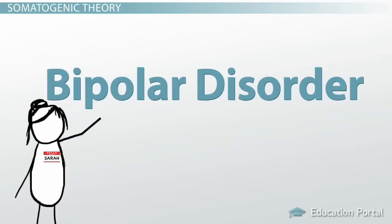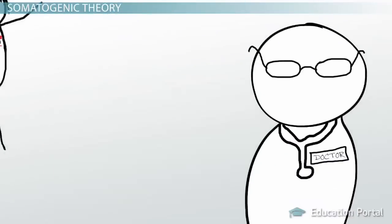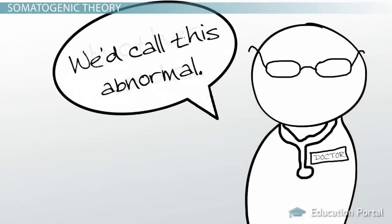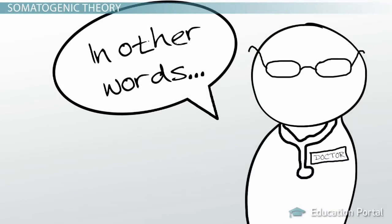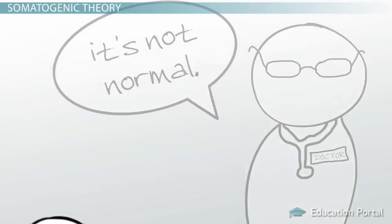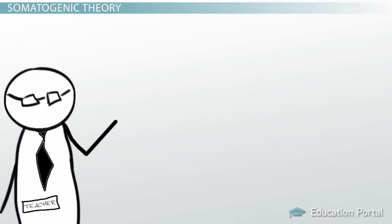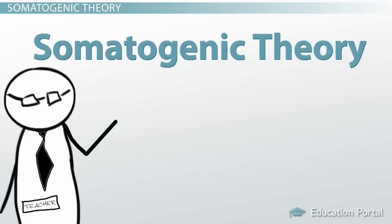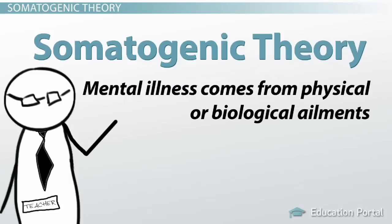Sarah suffers from bipolar disorder, a condition considered to be abnormal. That is, her behavior, emotions, and thoughts are different from the normal pattern that people display. One way of looking at bipolar disorder and other mental illnesses is the somatogenic theory, which says that mental illness comes from physical or biological ailments.